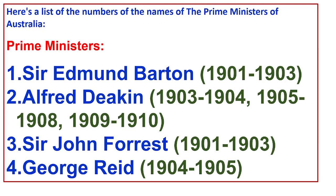Prime Ministers. 1. Sir Edmund Barton from 1901 to 1903. 2. Alfred Deakin from 1903 to 1904, also from 1905 to 1908, also from 1909 to 1910. 3. Sir John Forrest from 1901 to 1903. 4. George Reid from 1904 to 1905.